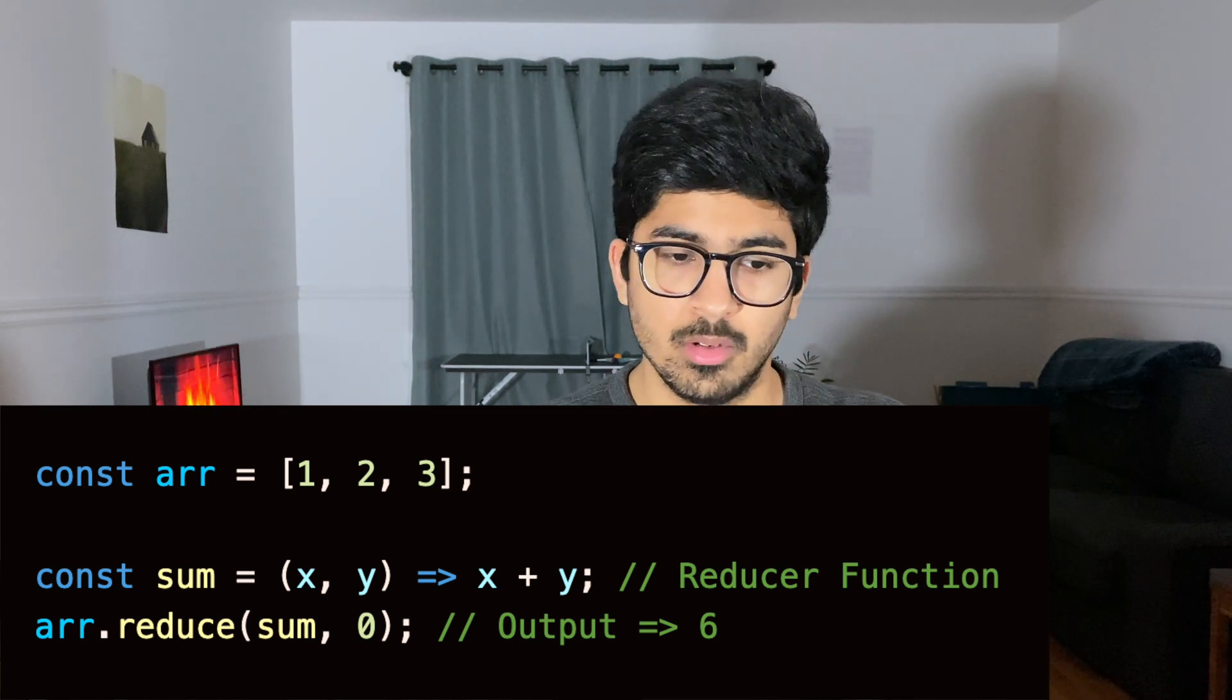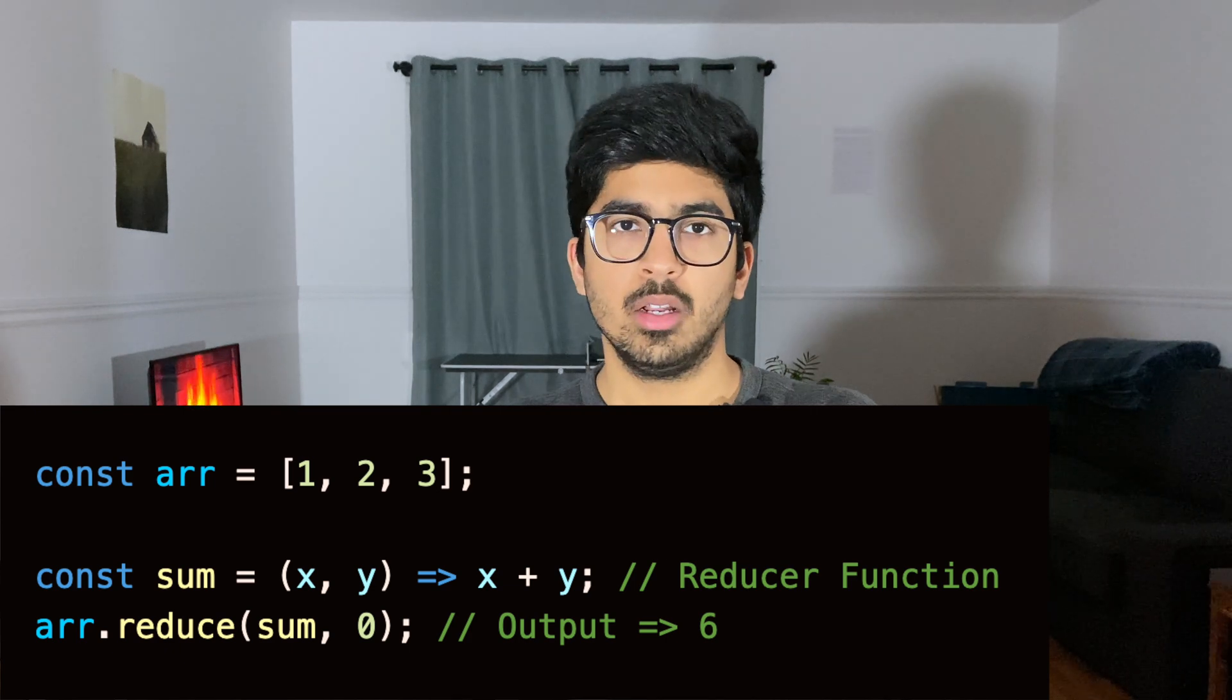In the array.reduce method, the first argument has to be the reducer. So what you want to do with the array elements and the second argument is the initial value. So this means if you want to add all the elements from the array, you have to start with zero. So in this example, it will start with zero plus one, then one plus two, then two plus three, giving us the sum of six. Isn't that simple?